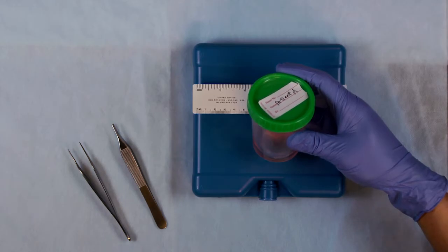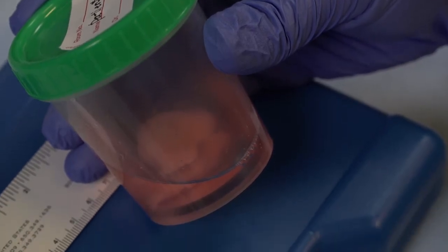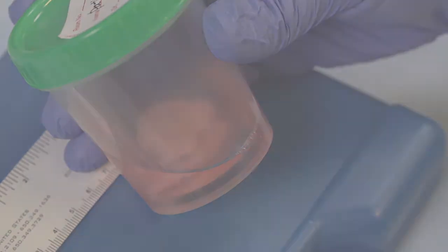Immediately, antral follicles need to be aspirated with an 18-gauge needle and scanned for immature oocytes. Ovaries are then transferred to cold media on an ice surface for dissection.